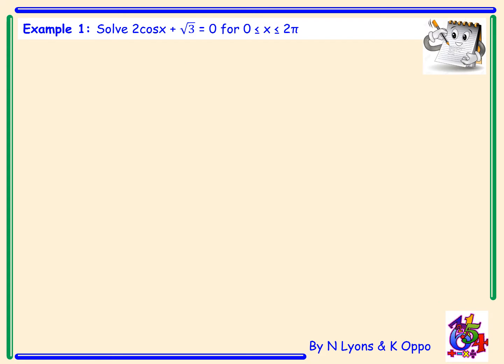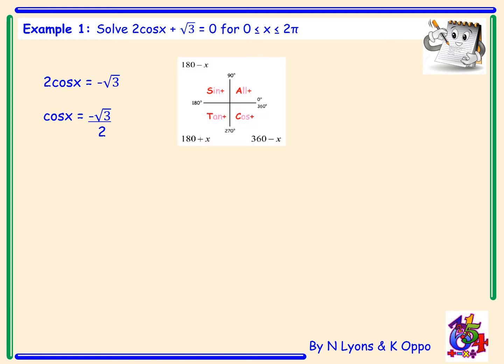Example 1. Solve 2cos x + √3 = 0 for x lying between 0 and 2π. The first step is to rearrange to get cos x = −√3/2. Since cos x is negative, we're looking for angles in the second and third quadrant.